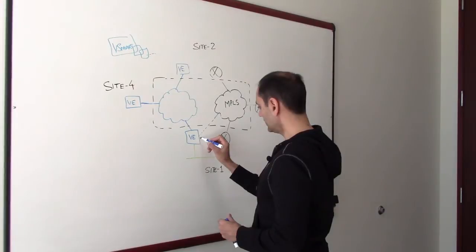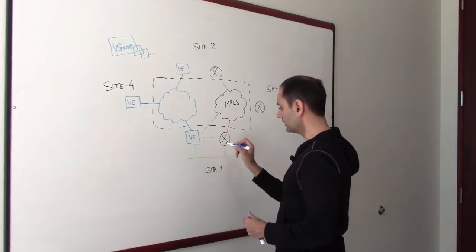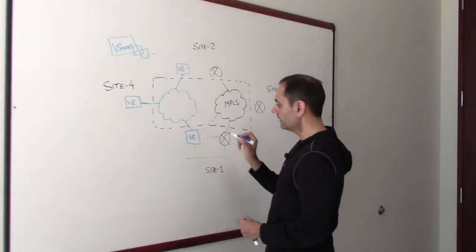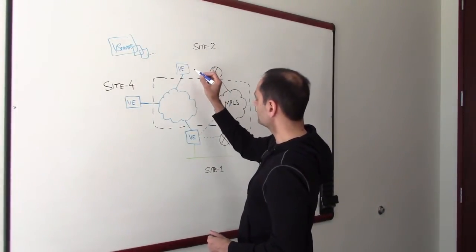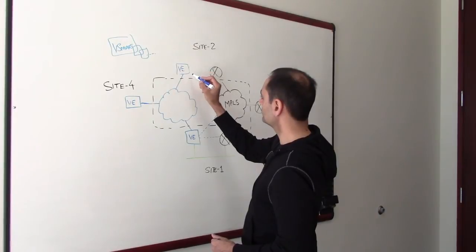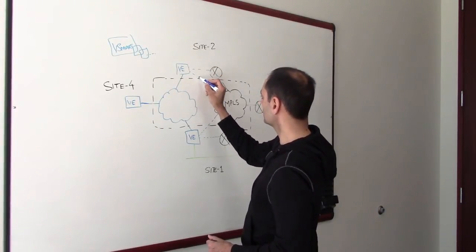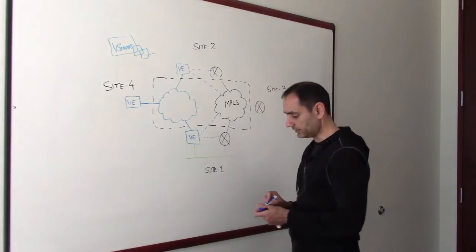Or you can connect the V-Edge to the existing router and it can use the existing router as a transport to MPLS. Similarly, on the other side, site two, which is connected to both transports, you can do the same thing. Either you connect it to existing router or you can go directly to the MPLS network here as well.